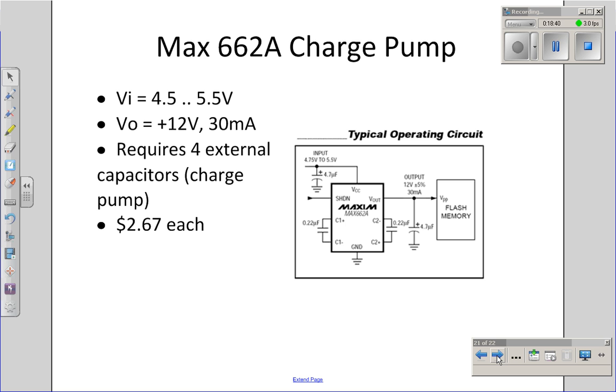You can also buy a charge pump on a chip. For example, a Max662A takes anything between 4.5 and 5.5 volts in and outputs a nice constant 12 volts, 30 milliamps out. This is useful when I need to come up with a 12 volt power supply. For example, flash memory oftentimes needs 12 volts to operate. I don't need a separate power supply for a 12 volt supply. I can just use the same 5 volt supply that goes to my processor, and with this chip, with a charge pump, deliver 12 volts to your flash memory.